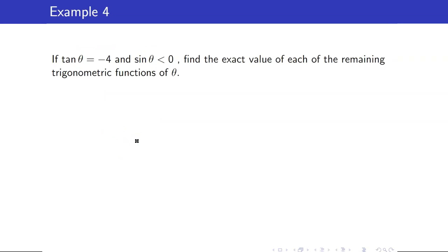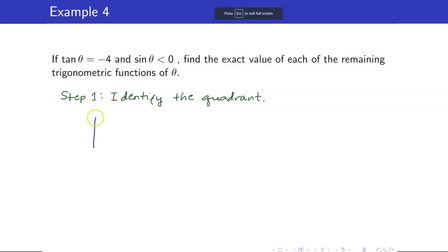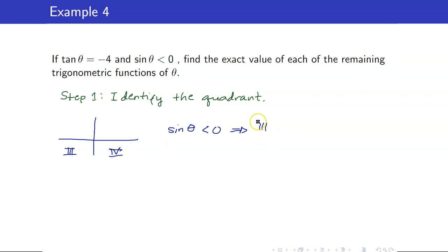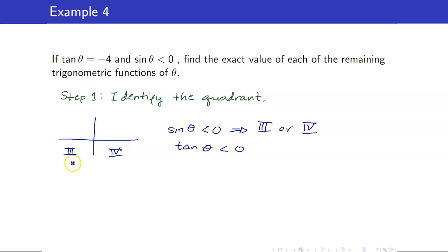Next: if tangent theta = -4 and sine theta < 0, find the remaining trig functions. Step 1: identify the quadrant. Since sine is negative, y is negative — so we're in quadrant 3 or 4. But tangent is also negative. In quadrant 3, tangent is positive (both x and y negative), so the tiebreaker puts us in quadrant 4.